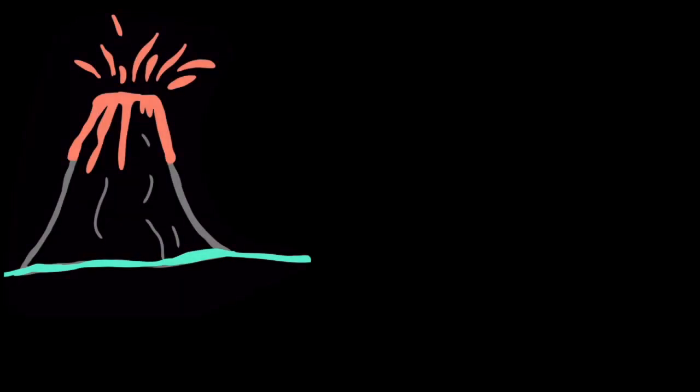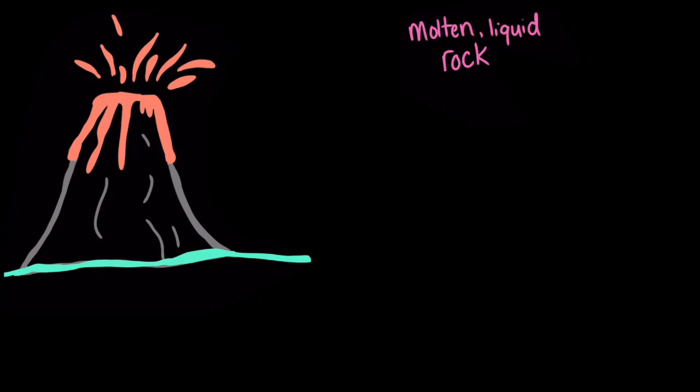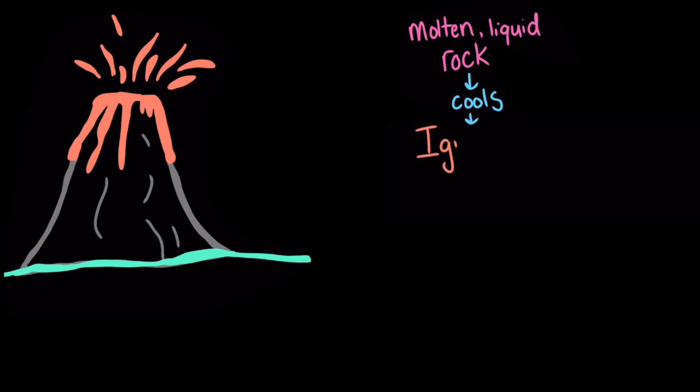When put at the right combination of heat and pressure, rocks can become molten and liquid. When this molten rock cools and becomes solid, we call the rock it makes igneous rock. This term comes from the Latin word igneous, which means fiery or burning hot. Igneous rocks make up more than 90% of the earth's crust.